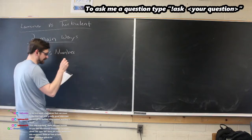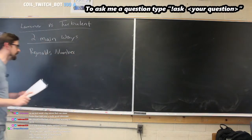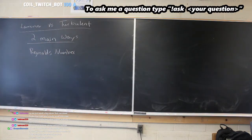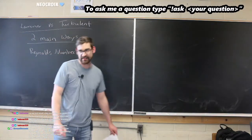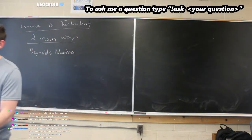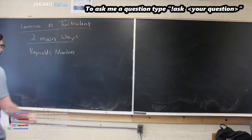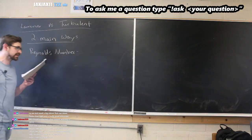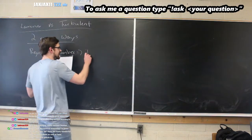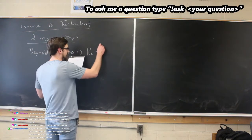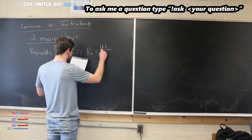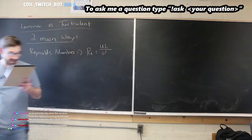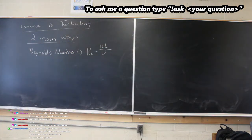They kind of exist in the same sense almost. The Reynolds number — some might say it's like a classification of Navier-Stokes, or a special case of it. But the Reynolds number is basically the following equation: it's going to be U·L over ν, where U is the flow speed or the velocity of the fluid.